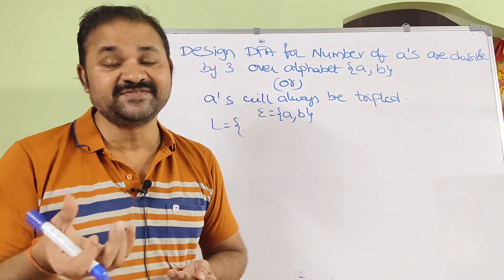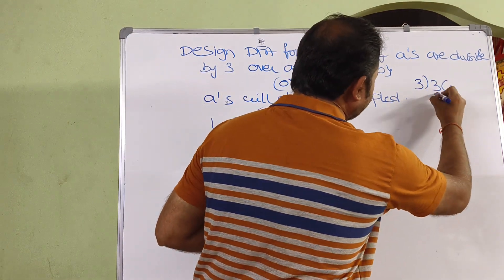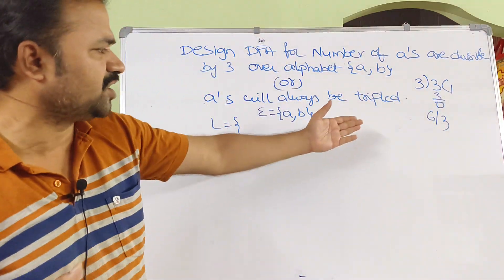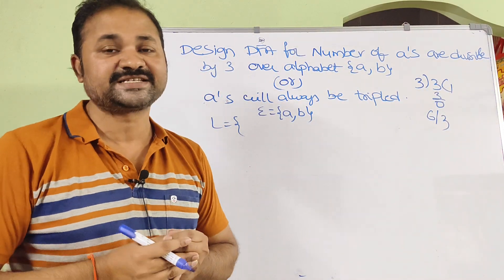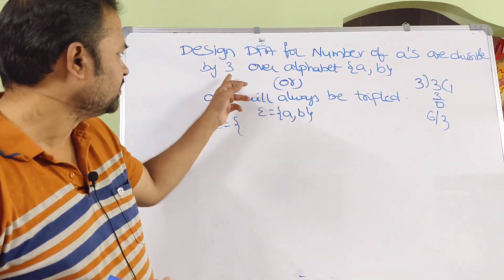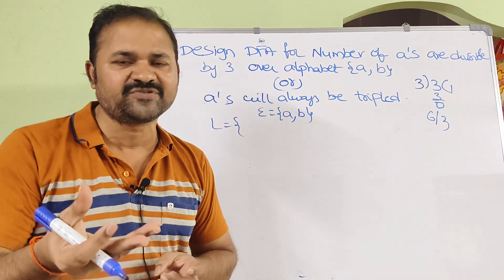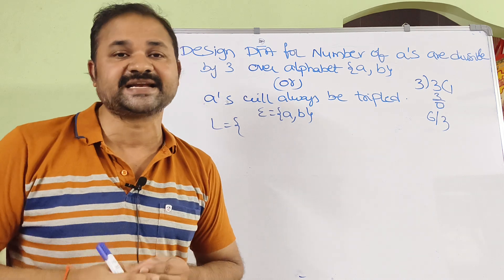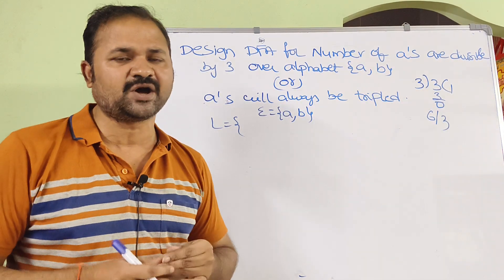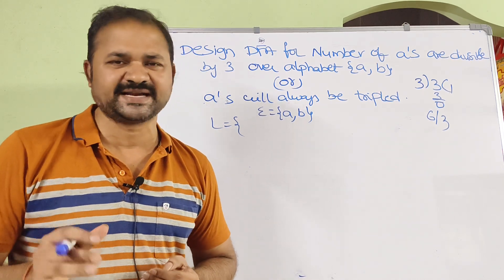We know that 3 is divisible by 3, likewise 6 is also divisible by 3, next 9 is divisible by 3, 12 is divisible by 3, and so on. So here the number of A's must be divisible by 3 — it may be 3 A's, 6 A's, or 9 A's, likewise. What about number of B's? There is no constraint on number of B's, so we can take 0, 1, or 2 B's, and so on.